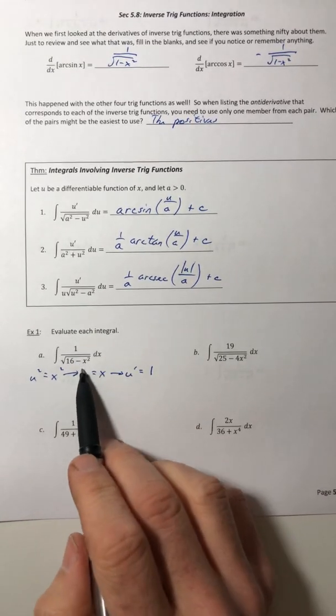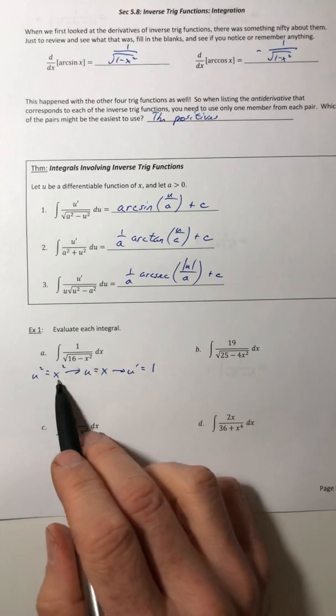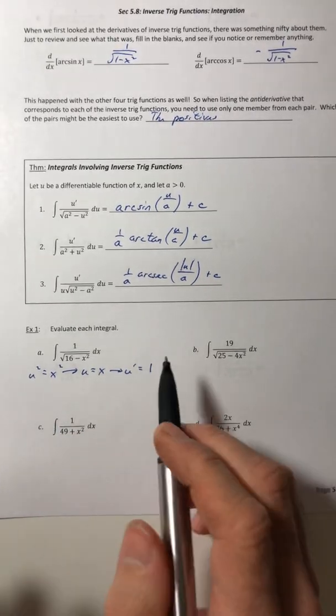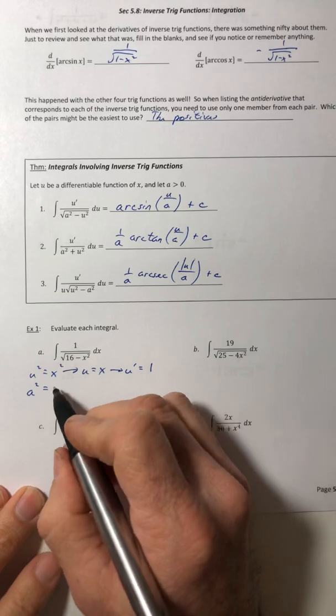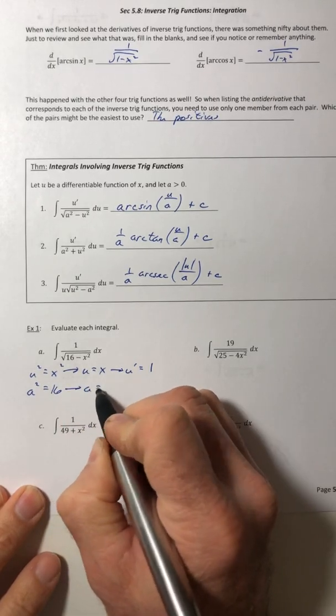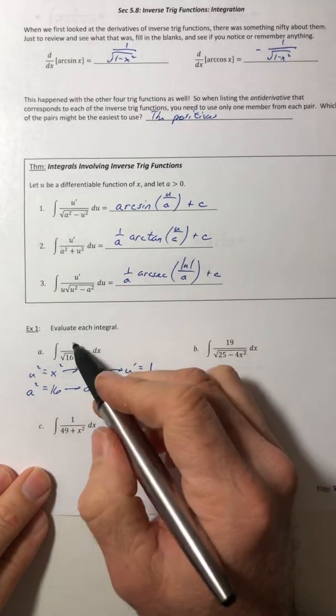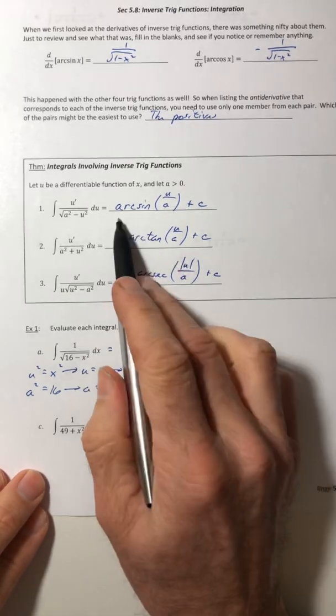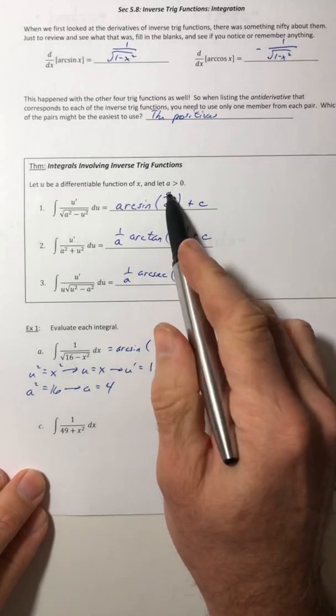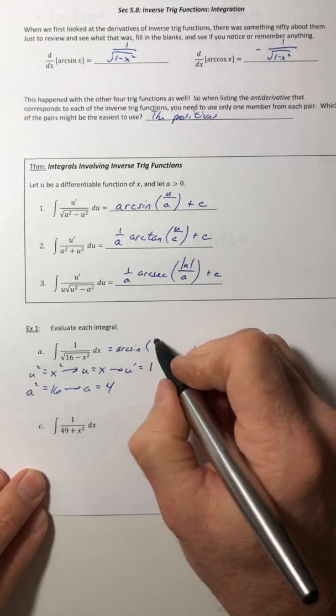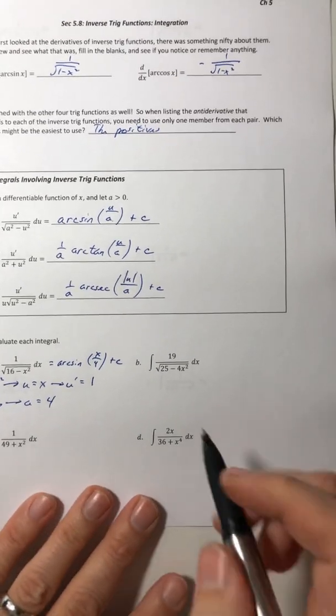What a lot of people do is they take the x squared and they take the derivative of x squared. You got to square root it first, then get the derivative and see if it's up there. All right. So now the constant, the 16, that's actually the a squared, which means a is 4. So I have everything I want. I have the u prime on top and it's going to integrate into arcsine of u over a. So the u is x, the a is 4, and then plus c.